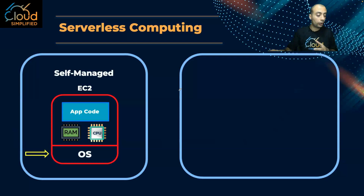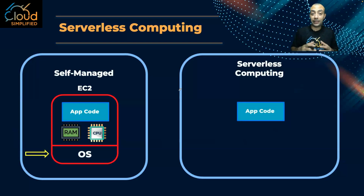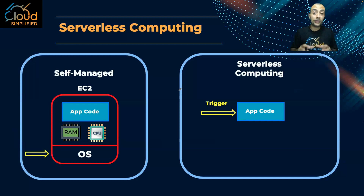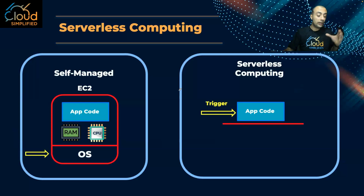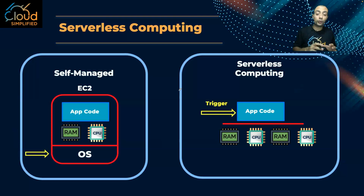Now let's explore the second model, which is serverless computing. In serverless computing — and from the name, serverless means you don't need to provision any servers. All you need to do is just upload your application code and specify what the trigger is, so that AWS will start executing this code. Serverless computing does not mean I don't have servers — it simply means you don't need to provision any server from the beginning.